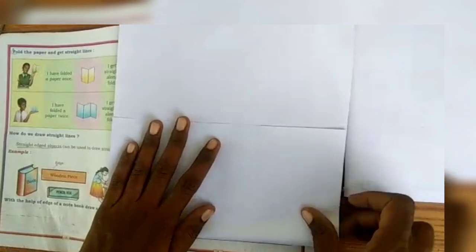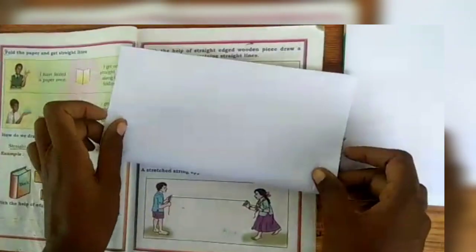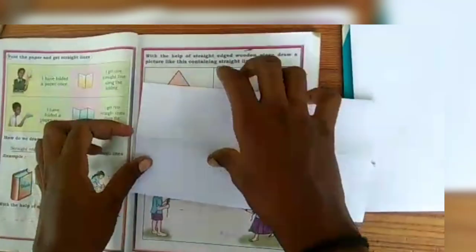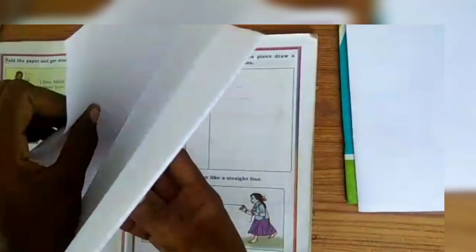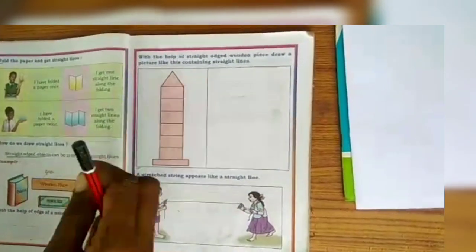Next, you should fold twice like this. Now, you have to see two straight lines.